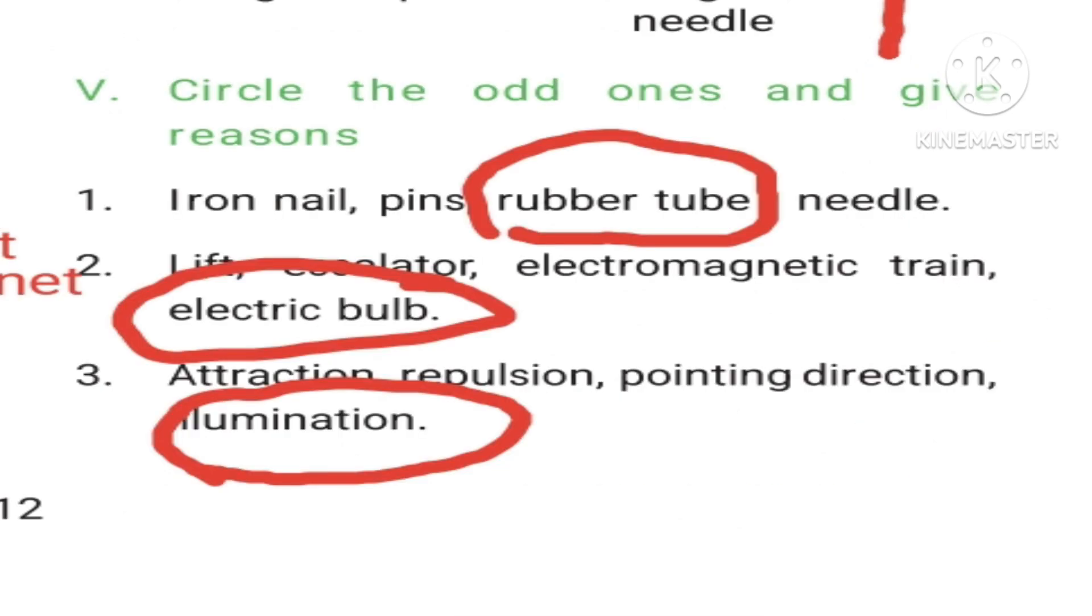Roman letter 5, circle the odd one and give reasons. First question: Iron nail, pins, rubber tube, needle. Answer is rubber tube. Second one: Lift, escalator, electromagnetic train, electric bulb. Answer is electric bulb. Third one: Attraction, repulsion, pointing direction, illumination. Answer is illumination.